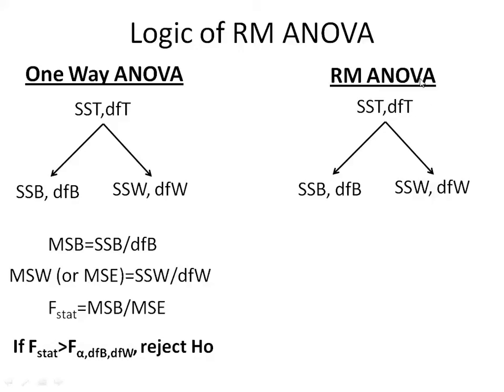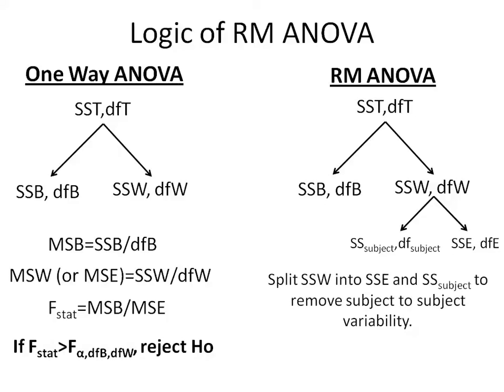What repeated measures ANOVA does differently is it splits the within-subject variability into two things: SS-subject and SSE, the sum of squares error. It's split this way to remove subject-to-subject variability. The idea is that we don't care as much about differences that occur within subjects versus those that persist between subjects, so we account for and remove that variability.